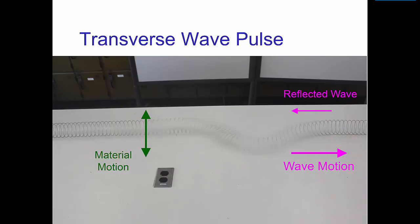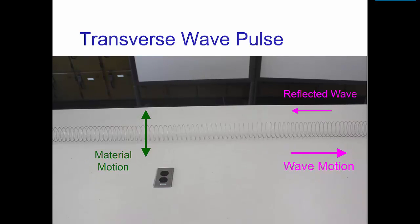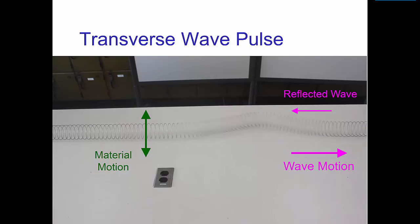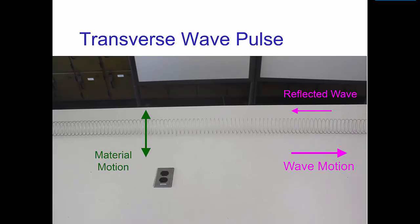On the other hand, the wave is traveling first to the right and then reflects and travels to the left. Again, for a transverse wave, the material motion is perpendicular to the wave motion.